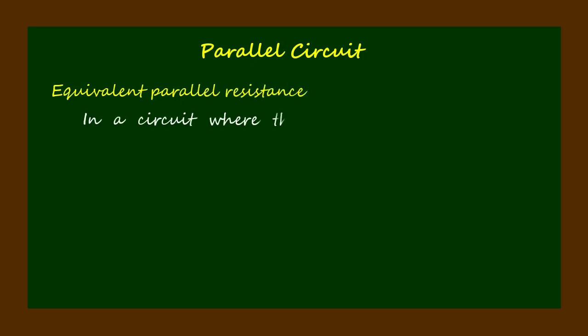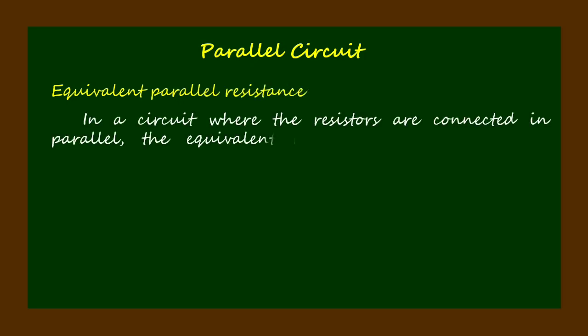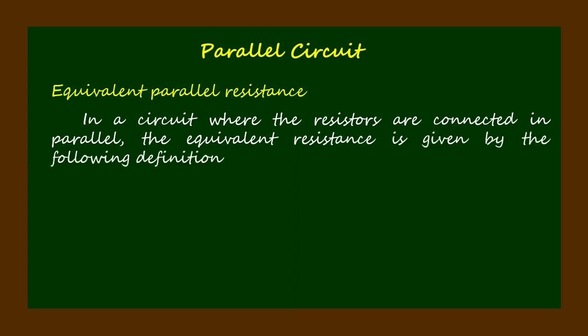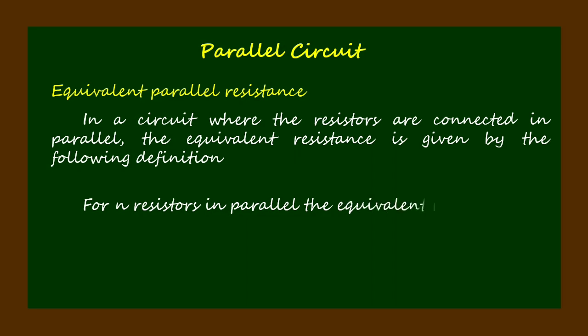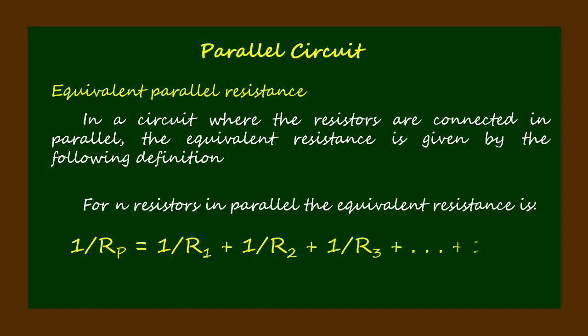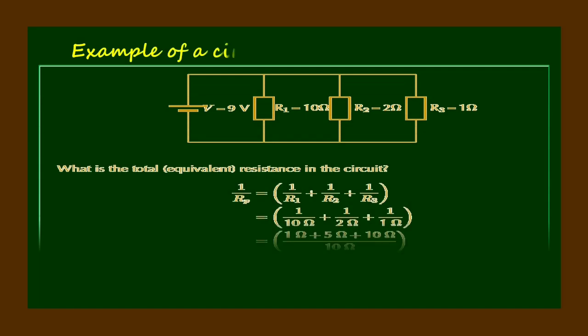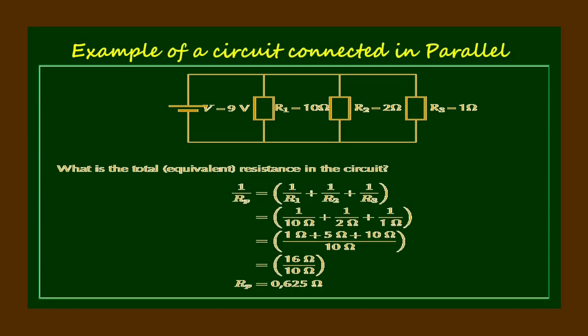Now let's define the equivalent resistance in a parallel circuit. In a circuit where the resistors are connected in parallel, the equivalent resistance is given by: for n resistors in parallel, 1 over R sub P equals 1 over R1 plus 1 over R2 plus 1 over R3 plus 1 over R sub n. Here's an example: 1 over R sub P equals 1 over 10 ohms plus 1 over 2 ohms plus 1 over 1 ohm, and the equivalent resistance in parallel is 0.625 ohms.